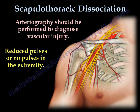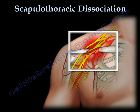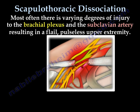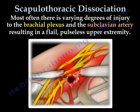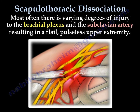The patient will have reduced pulses or no pulses in the extremity. Angiograms should be performed to diagnose the vascular injury. Most often there is varying degrees of injury to the brachial plexus and to the subclavian artery, resulting in a flail, pulseless upper extremity.